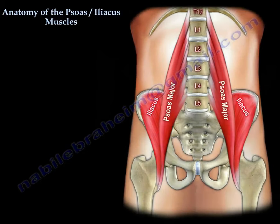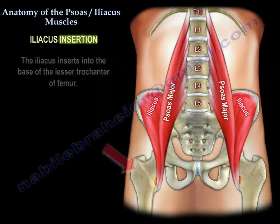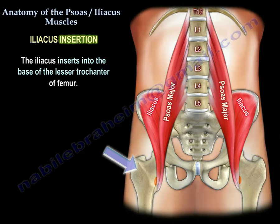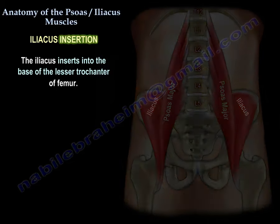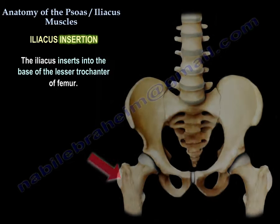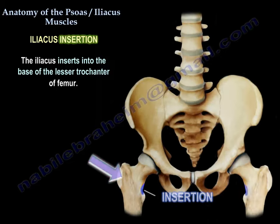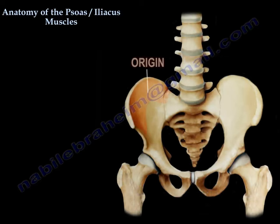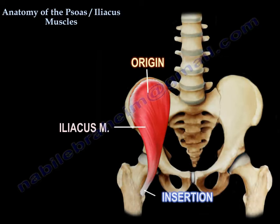It inserts into the base of the lesser trochanter of the femur, and you can see the iliacus from origin to insertion in this diagram.